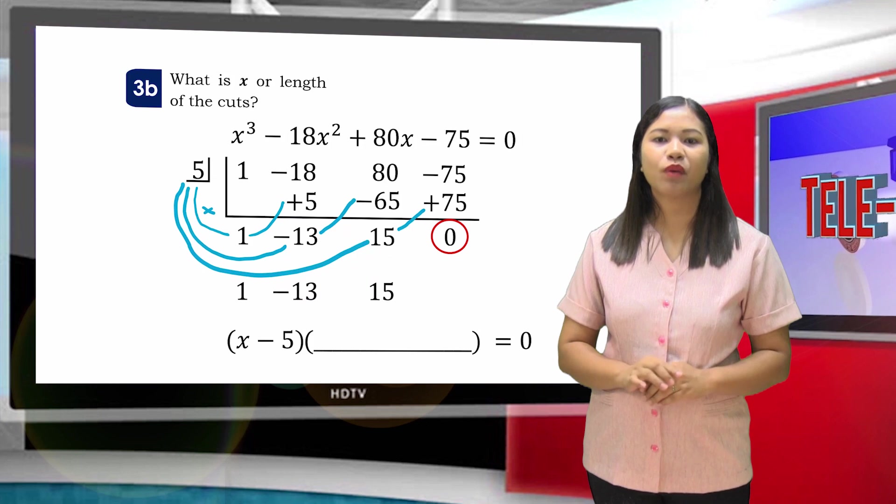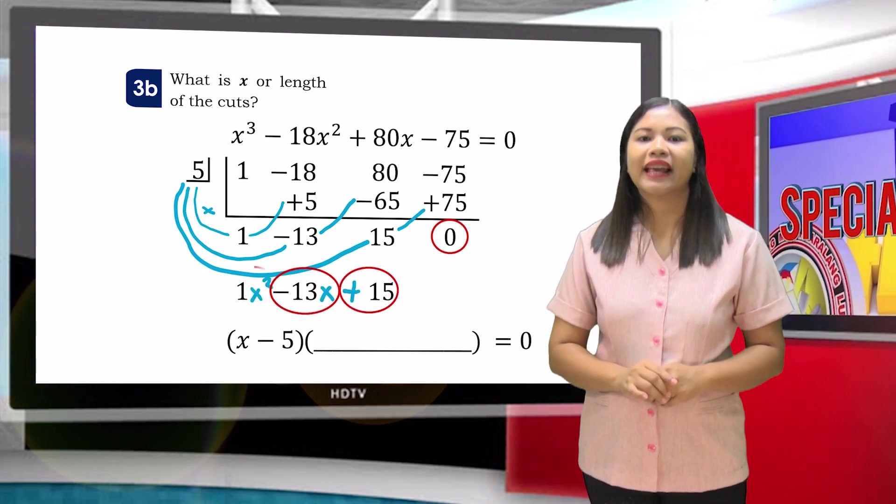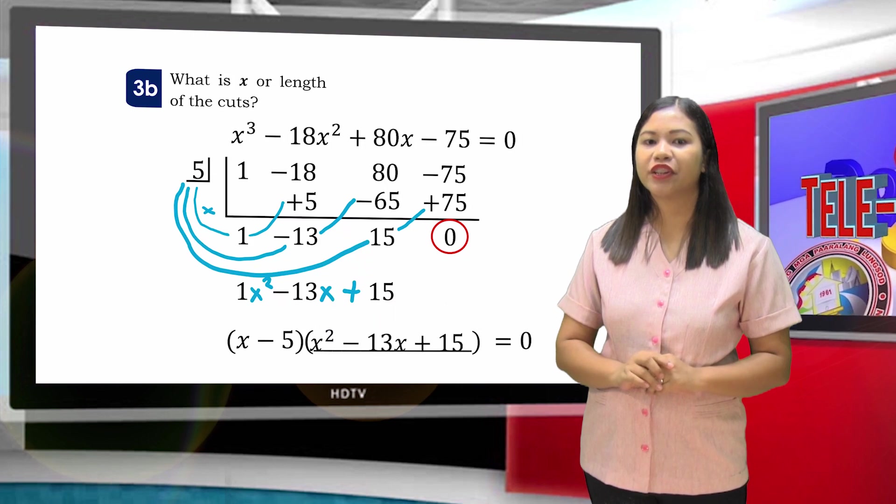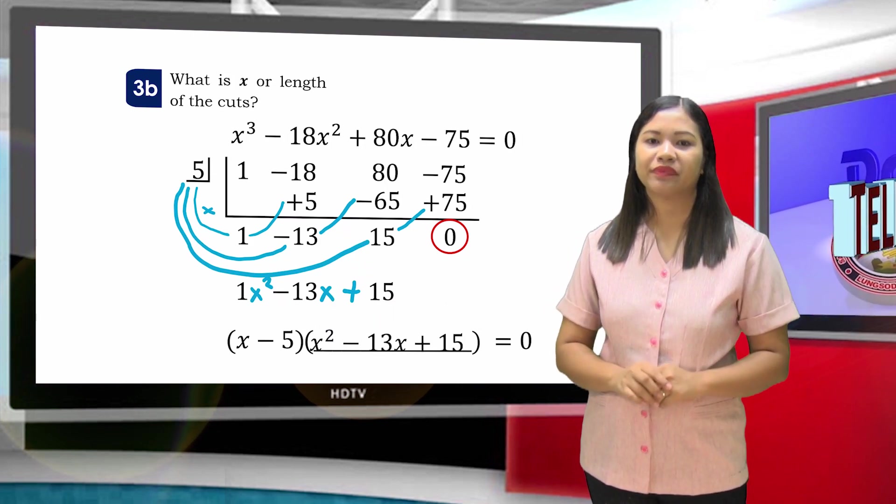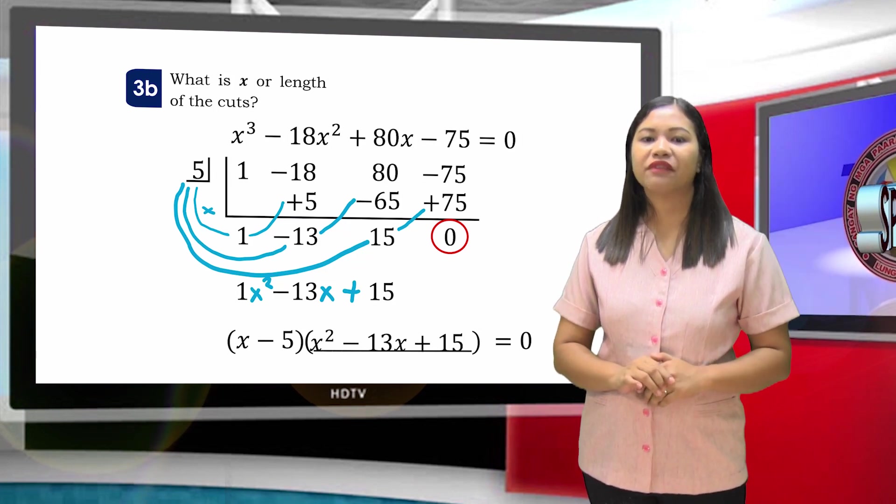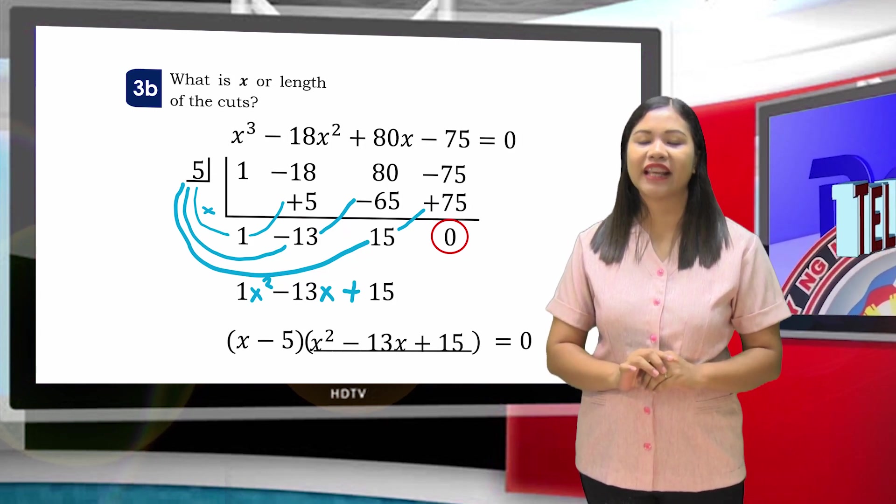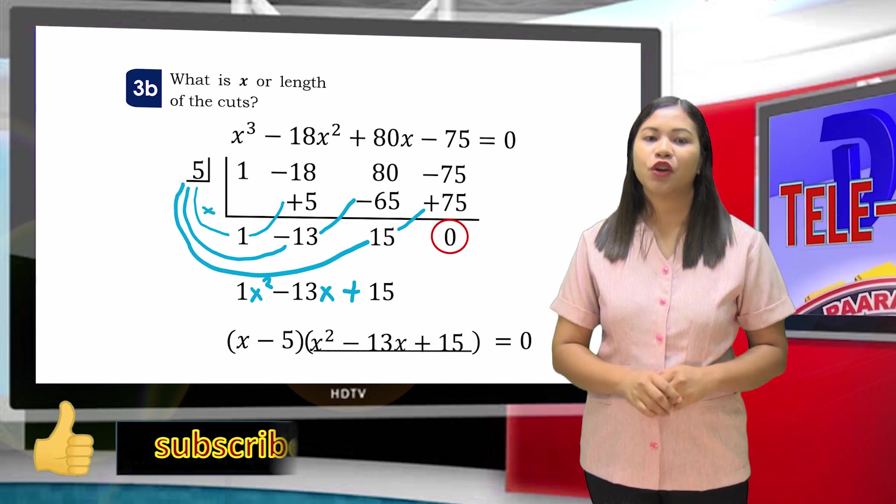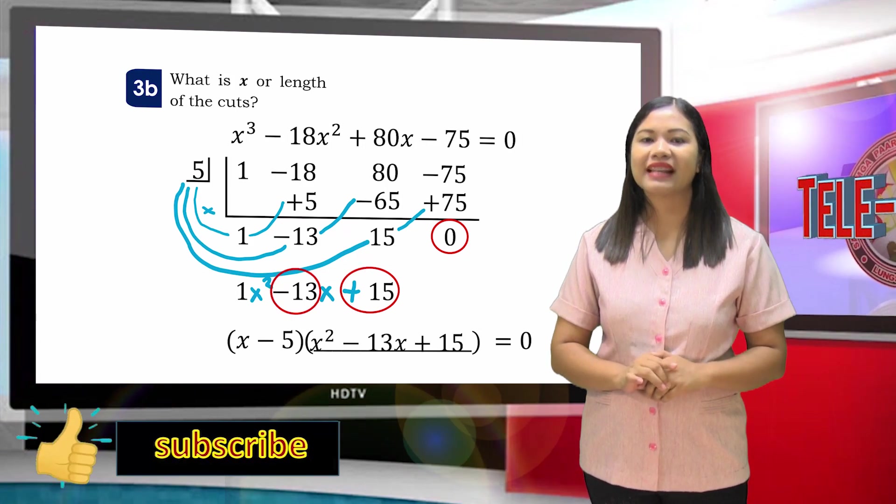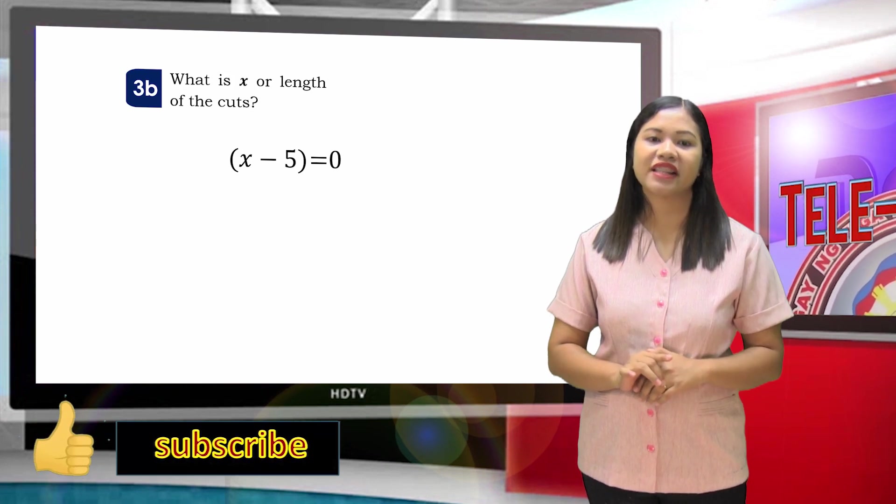What is the other factor? This can be found in the quotient. This will be the constant term, this will be the linear term, and this will be the quadratic term. And this forms a quadratic expression. But we cannot factor it further since there are no such numbers with the product of 15 and the sum of negative 13. With this, we will just get the first factor and equate it with 0. So X = 5. Therefore, the length of the cuts or the height of the box is 5 inches.